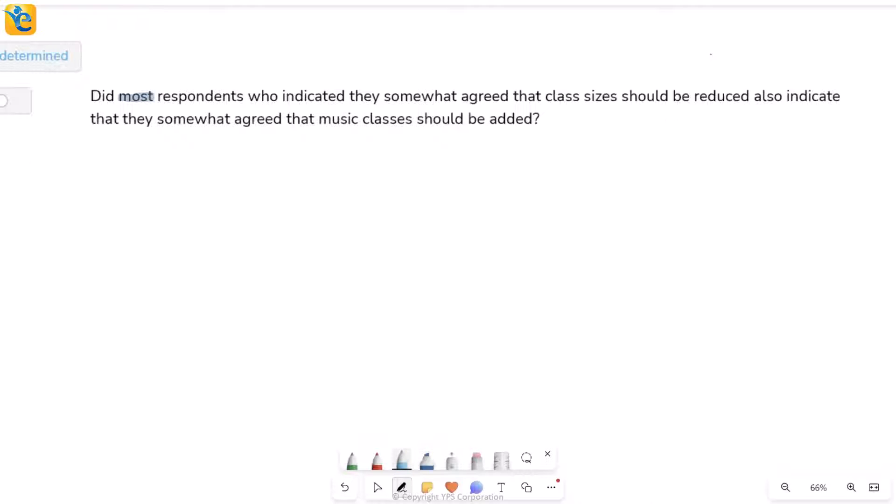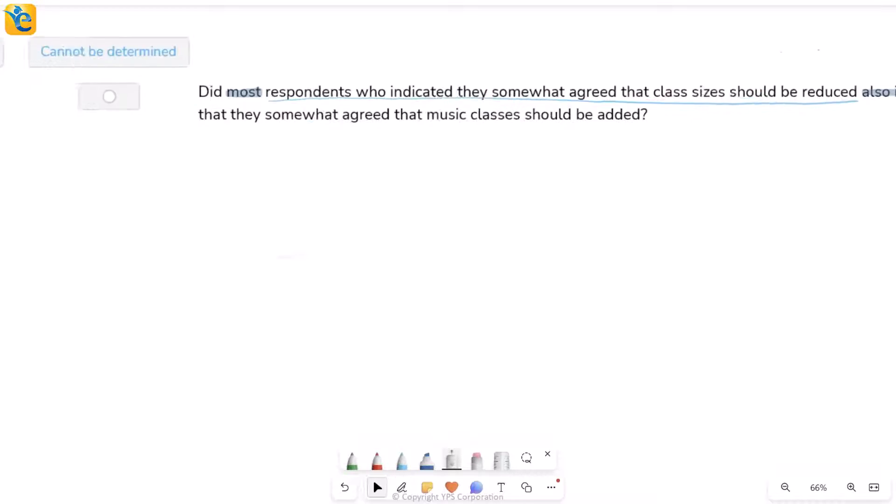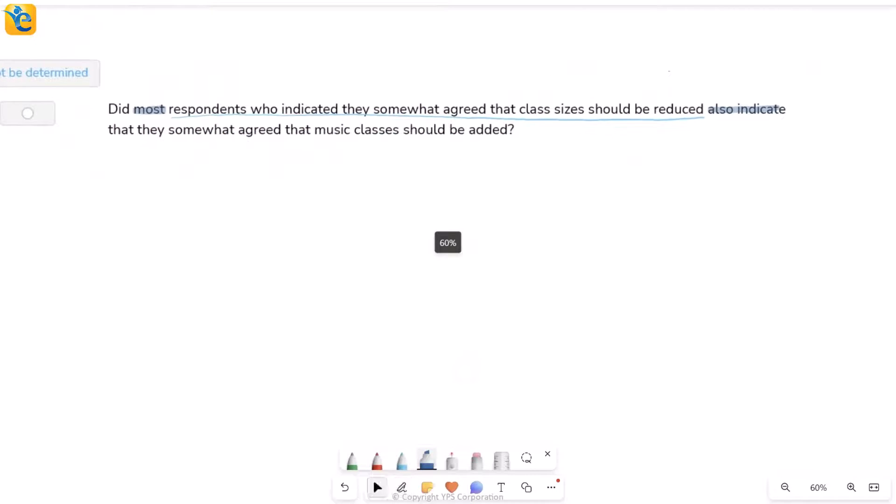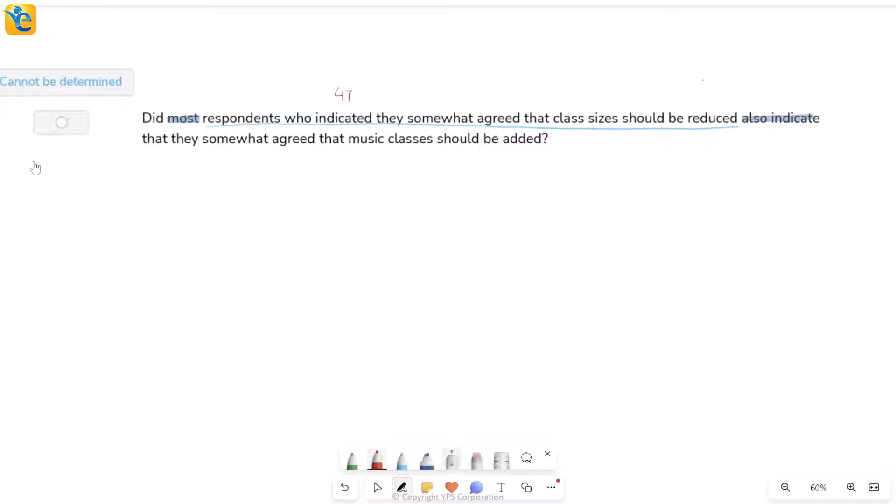The first one asks: did most respondents who indicated they somewhat agreed that class sizes should be reduced also indicate something else? This entire thing is just a description of which respondents you're looking at first. So did most of which respondents? The respondents who indicated somewhat agreed to class sizes being reduced. That's the first activity - somewhat agree is this number, 0.47, which is 47 people.